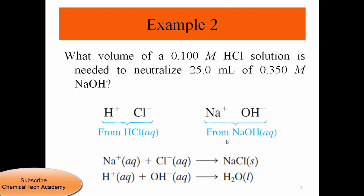Next example: What volume of a 0.1 molar HCl solution is needed to neutralize 25 mL of 0.35 molar sodium hydroxide? Here we have the volume and concentration of the base and the concentration of the acid, but we need to find the volume of acid required. In the acid we have H⁺ and Cl⁻; in the base we have Na⁺ and OH⁻. Na⁺ and Cl⁻ form NaCl, which stays in aqueous solution.